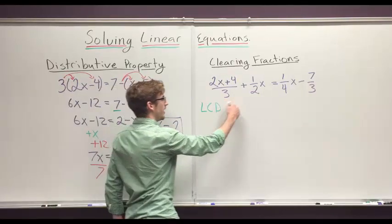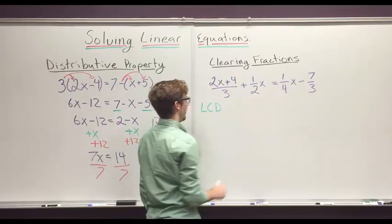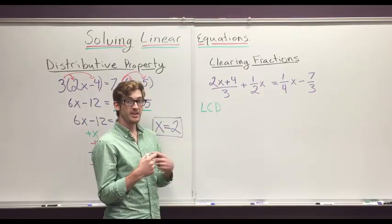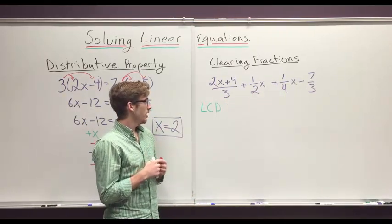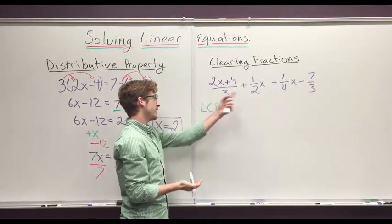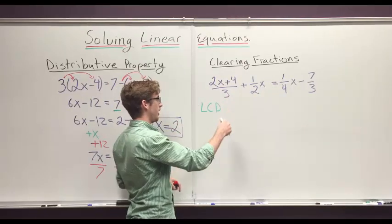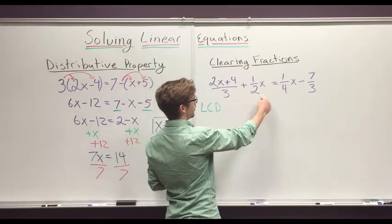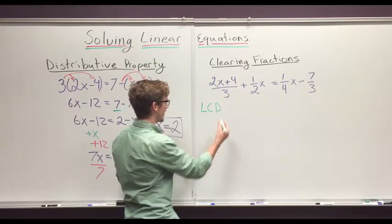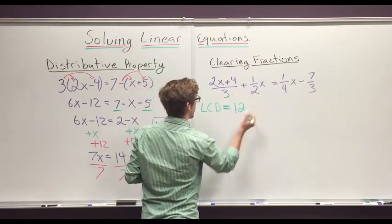Well, we have 3 and 2 and 4. 3 and 2, the least common denominator for 3 and 2 is 6, but 4 doesn't go into 6. And so then we need to look at, well 4 and 2 is 8, but 3 doesn't go into 8. So what's the next step up? Well, 3 and 2 and 4, do they all go into 12? They all go into 12, so our least common denominator here is going to be 12.